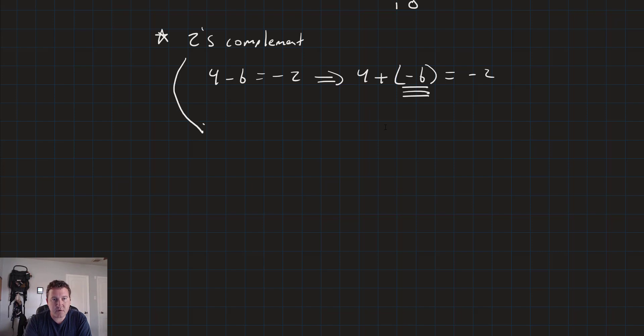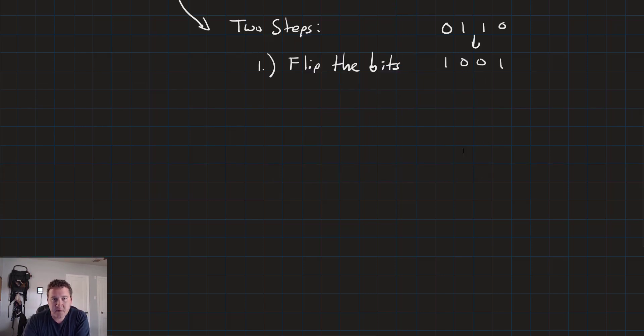So we want to do a 2's complement conversion. There are two steps. The first step is flip the bits, right? So 0110 becomes 1001. And then the second step is add 1, and we get 0 carry 1, 1, 0, 1. And this is negative 6 in 2's complement.